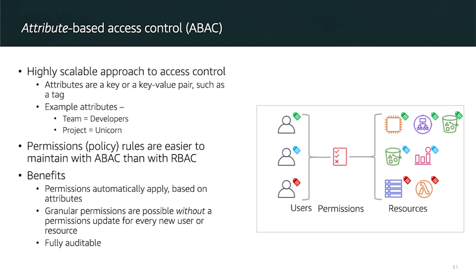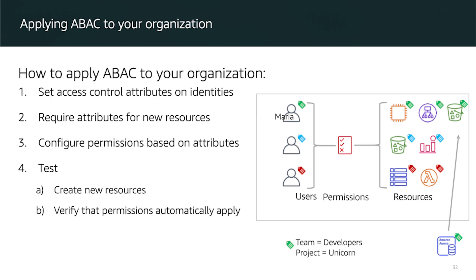Here is an example of applying an attribute-based access policy. First, create an identity such as an IAM user or IAM role with attributes used for access control — for example, applying the 'team: developers' and 'project: unicorn' tags to the Maria user. Then create policies that require a project attribute and a team attribute on any new resource. Configure access permissions based on these attributes: if an IAM user has 'project: unicorn' and 'team: developer' tags and tries to access a resource with matching tag values, the policy will allow access; otherwise it will deny.